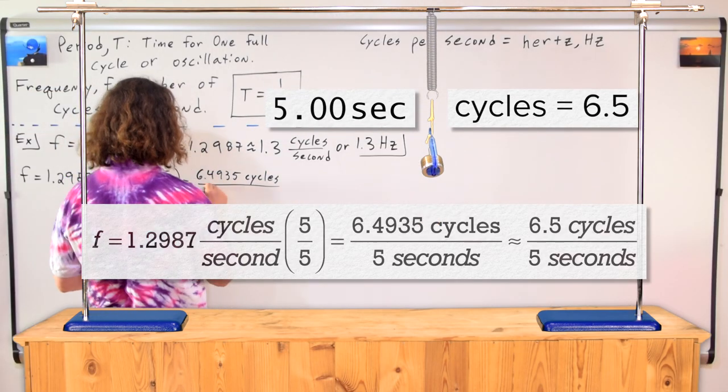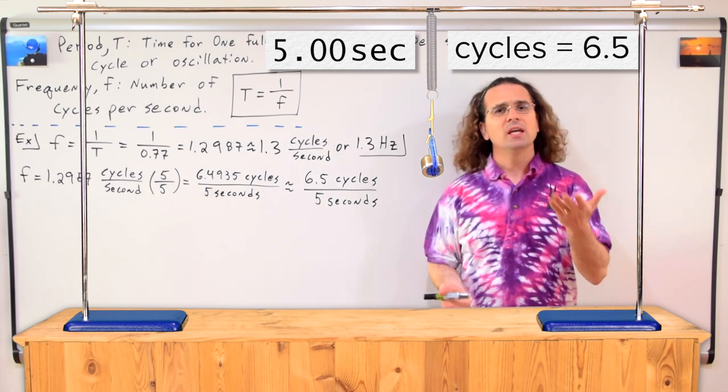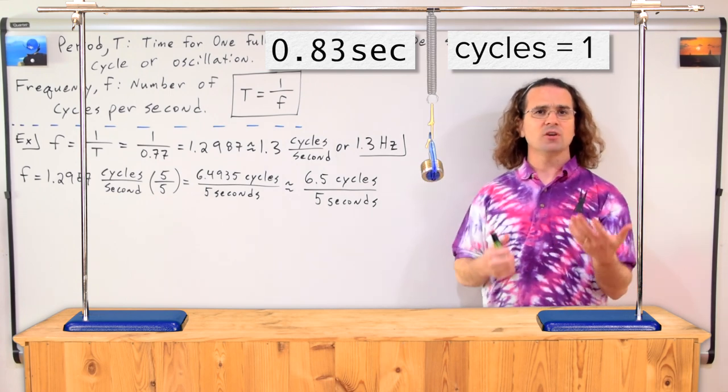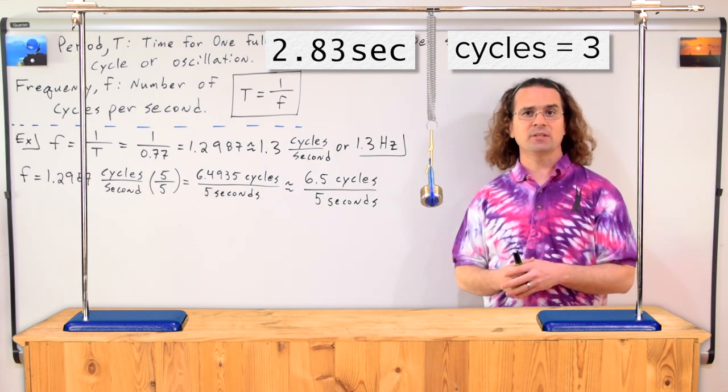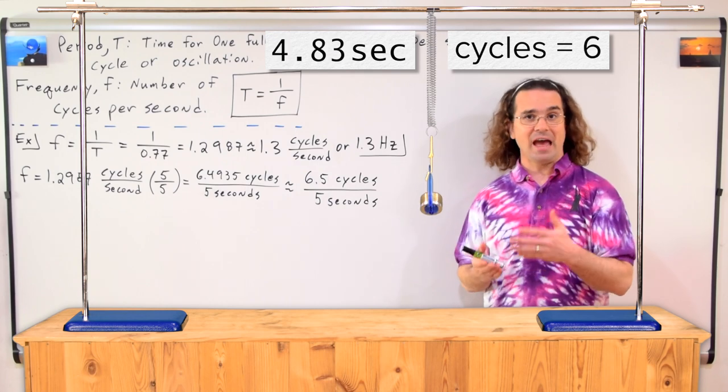Okay, sure. It's a good point, Bo. If we watch for five seconds, we can more easily see that the mass spring system has gone through six and a half cycles.